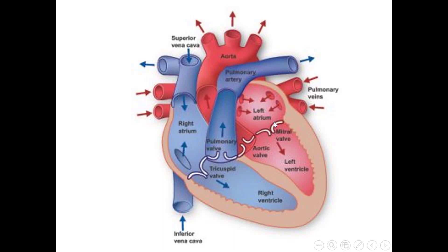The four pulmonary veins bring oxygenated blood from the lungs into the left atrium, which is the upper left chamber of the heart. From the left atrium, the oxygenated blood passes to the left ventricle through the mitral valve. From the left ventricle, the oxygenated blood passes to the aorta, which is the biggest vessel in our body, and is distributed all over the body.